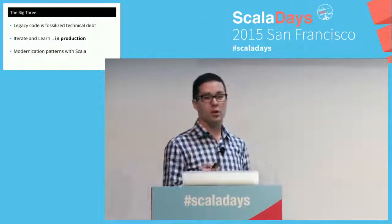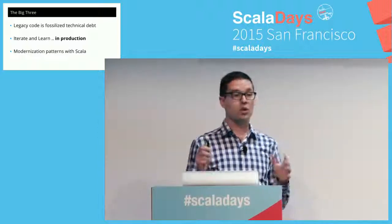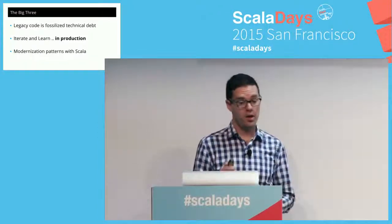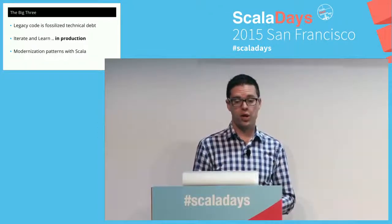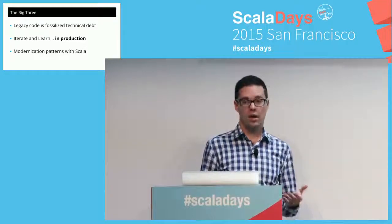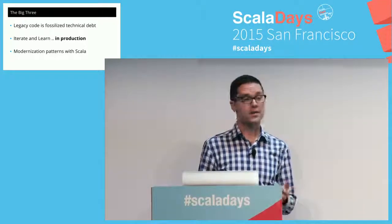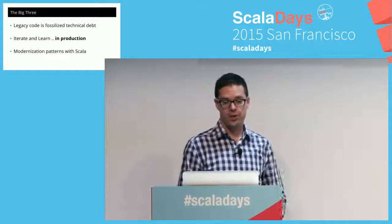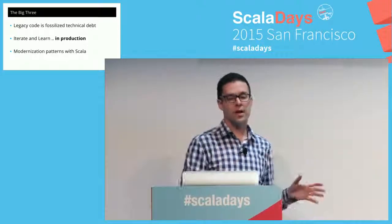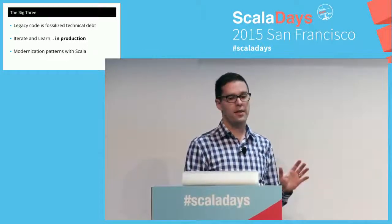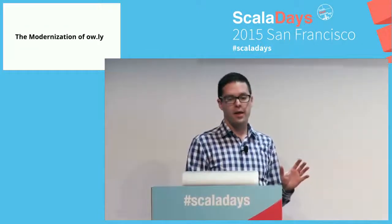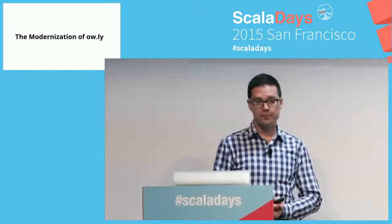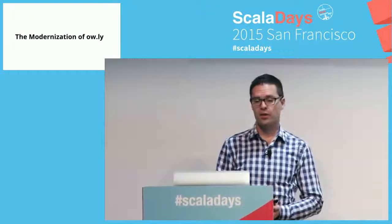So again, the big three things: legacy code is fossilized technical debt; you can iterate and learn, always in production; and you can modernize into Scala — there are some patterns to do so. That was the service extraction from the monolith of member service.